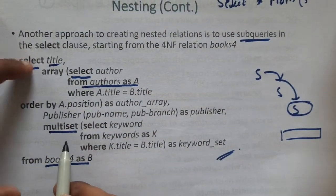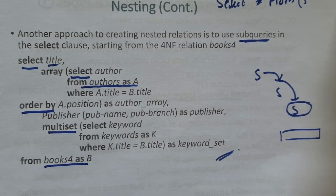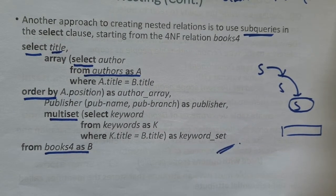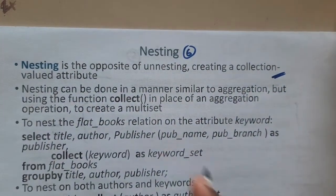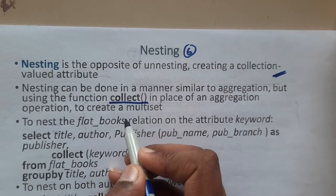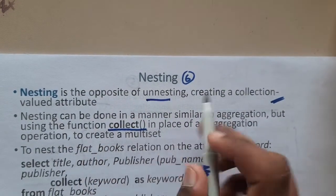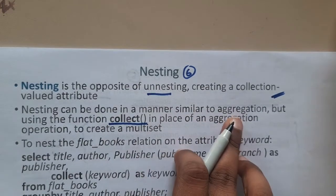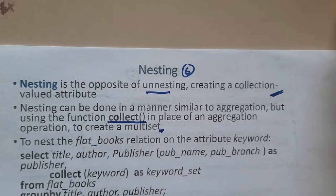We also used multi-set and ORDER BY. ORDER BY is used to arrange results in ascending or descending order based on your requirement. I hope everyone got a basic idea about the original nested queries we commonly use. In advanced databases, we also have a function called COLLECT. Nesting is the opposite of unnesting — creating a collection of valued attributes. Nesting can be done similarly to aggregation but using the function COLLECT in place of an aggregation function.